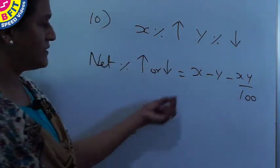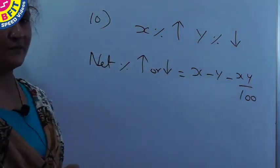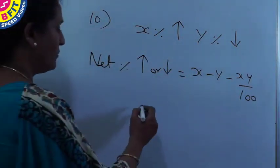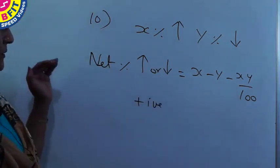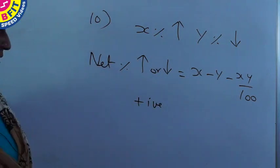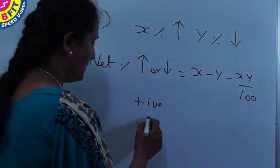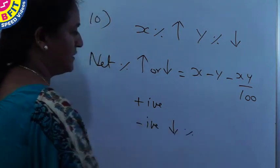So this minus represents the decrease in percentage. If you get an overall positive sign, it means the total effect is an increased percentage. And the negative sign implies a total decrease percentage.